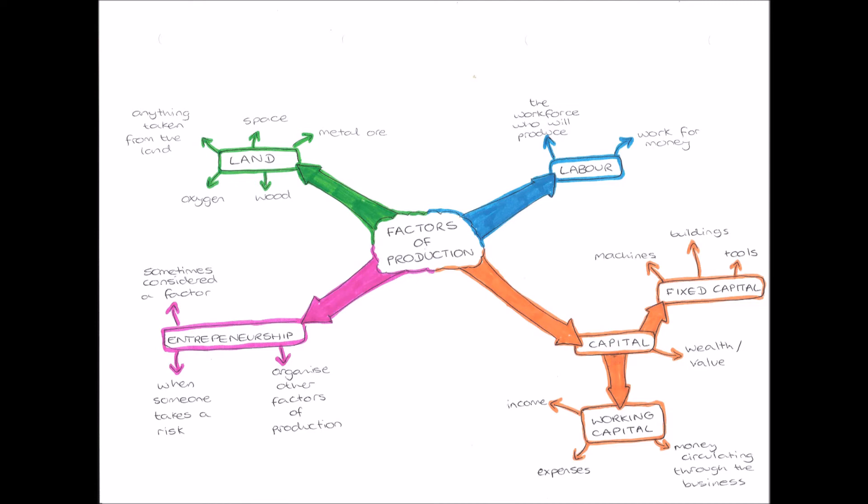They help us and we need them in order to produce goods. Next we have working capital or working wealth or value, and this is money circulating through the business. This is in the form of income, so money comes into the business, it then is transferred through the business and leaves as expenses, so the business spending money. That money is circulating or flowing through the business, so it is working capital.